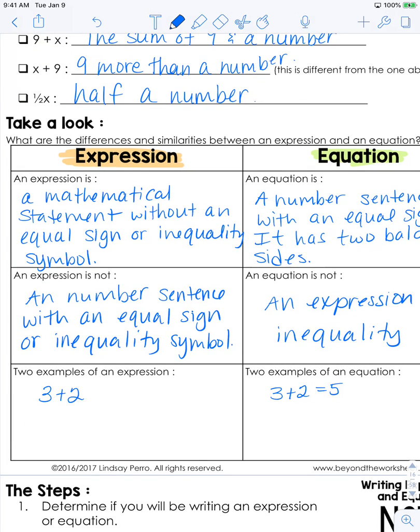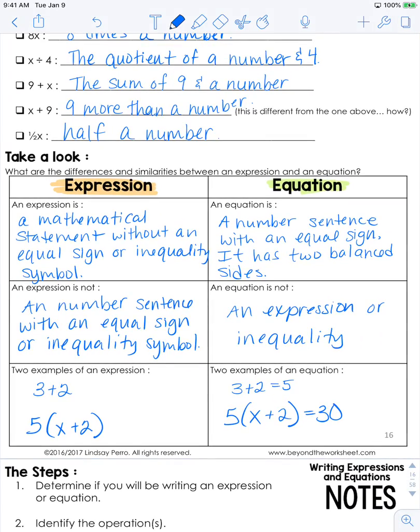Another example of an expression with variables this time would be 5 times the sum of x and 2. And then turning that into an equation: 5 times the sum of x and 2 would be 30. So that's the difference between an expression and an equation.